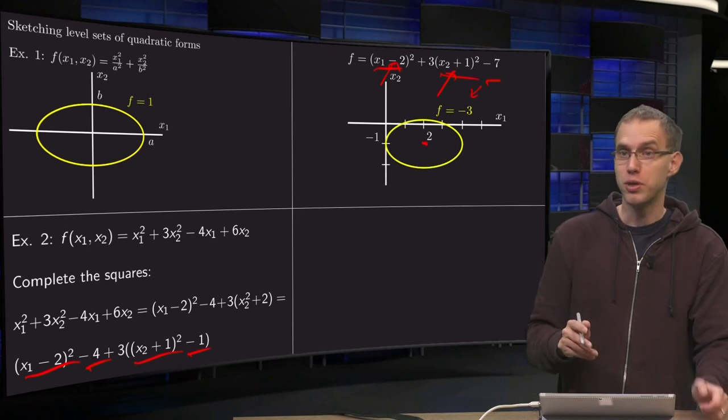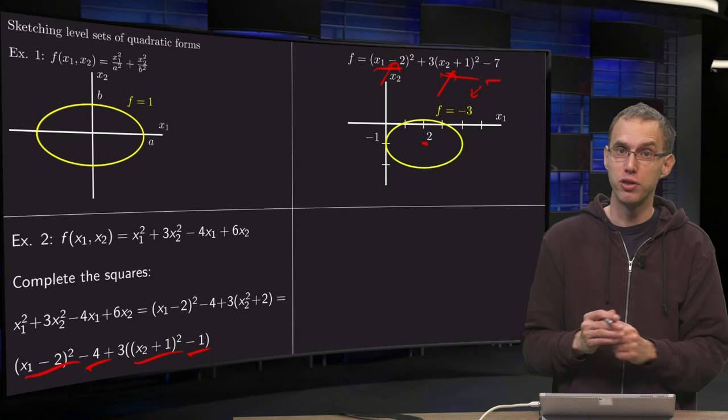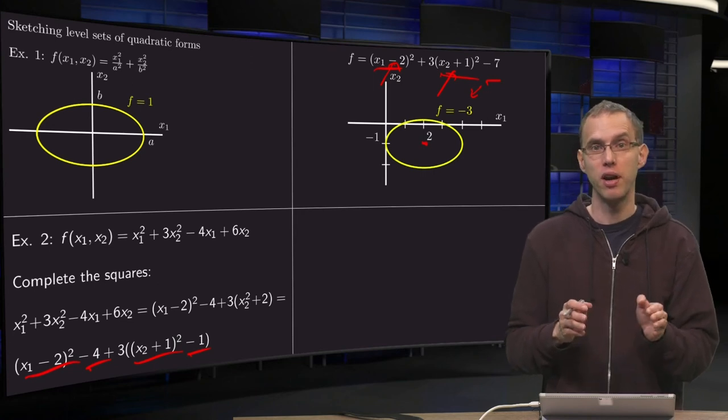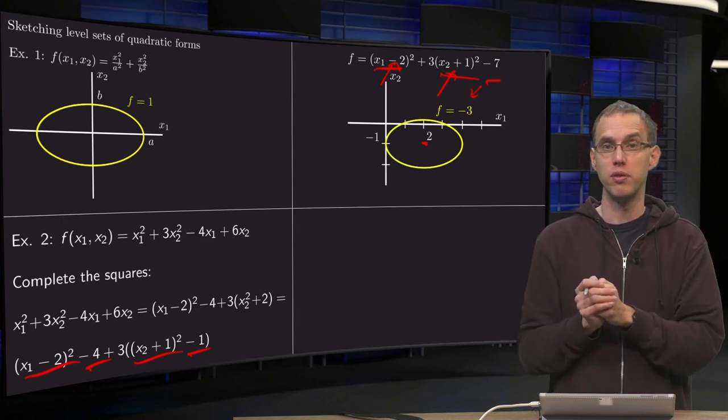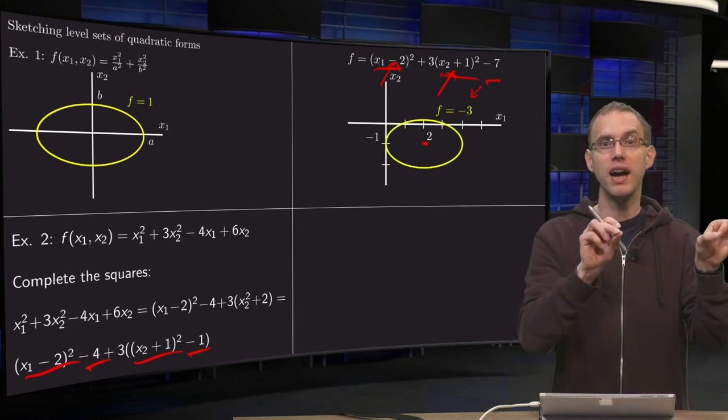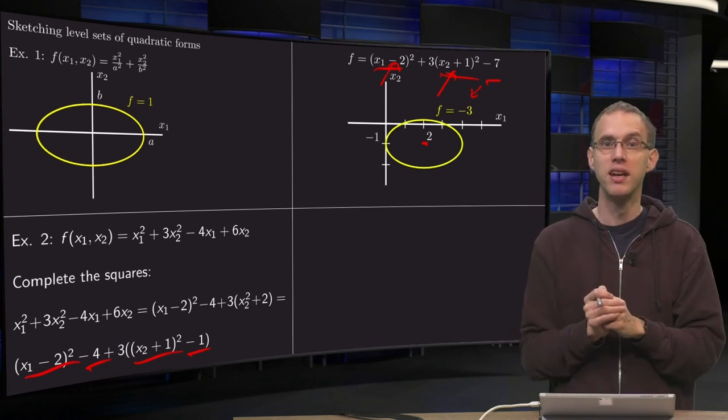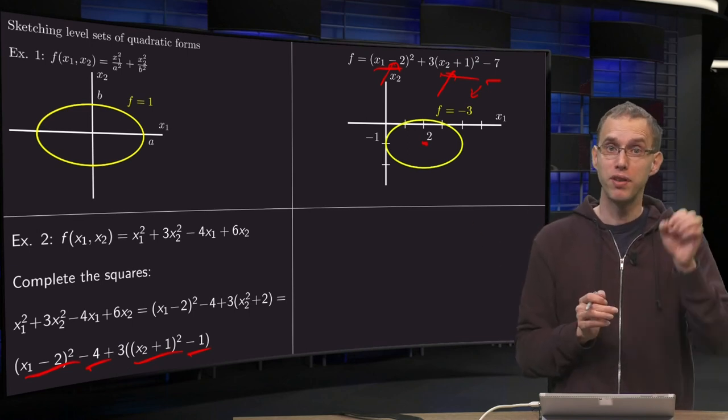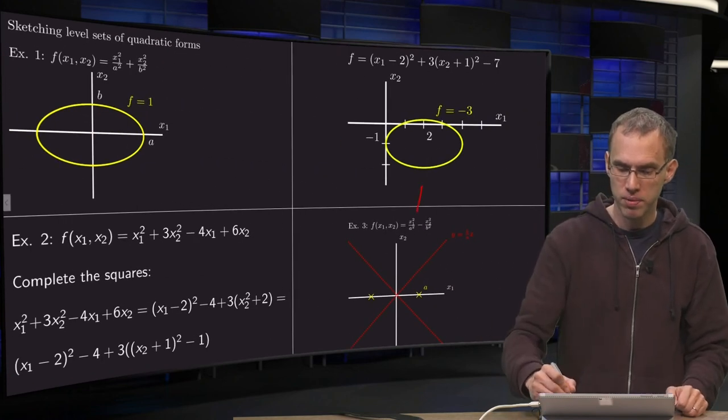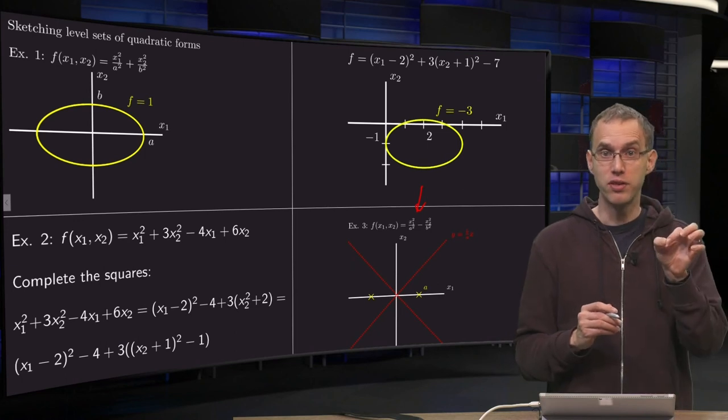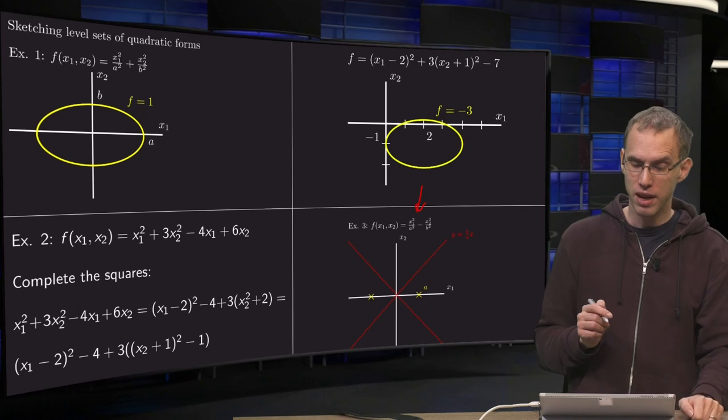Now, up till now, so what can we do more if we have a function of two variables? Well, up till now we have a positive term times x1 squared plus positive term times x2 squared equals, say, 1. If you would have two minuses, then you would just put the constant to the right to a minus and get rid of it. But what happens if you have a plus and a minus? So what happens if you have, in this case, x1 squared over a squared minus x2 squared over b squared? Well, then something else is going to happen.